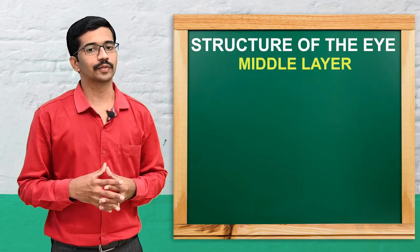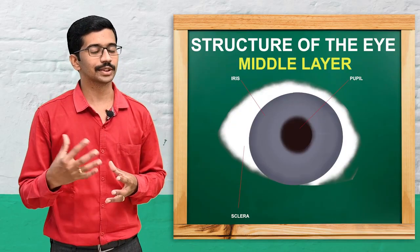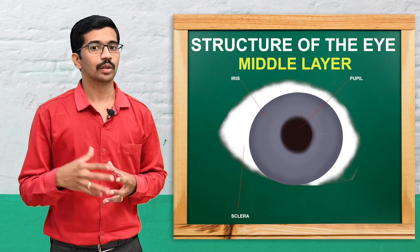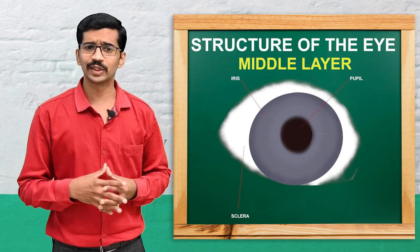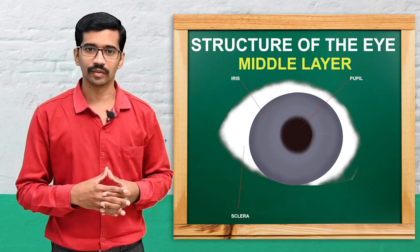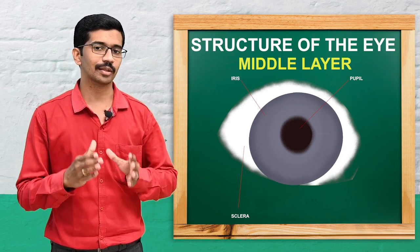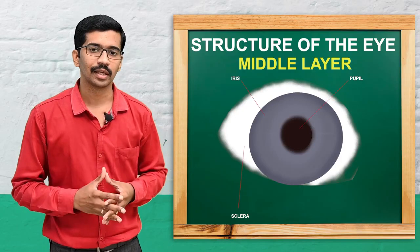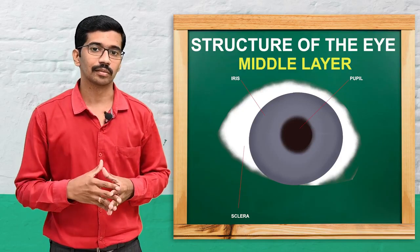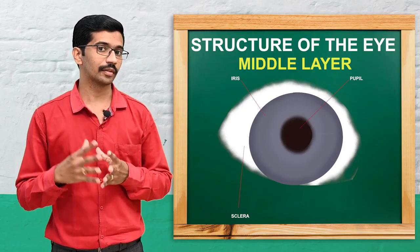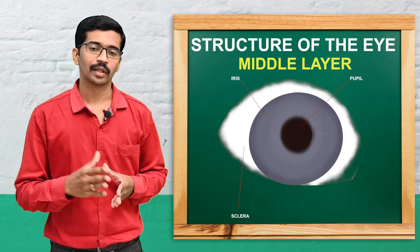The middle layer of the eyeball is the choroid, which is rich in blood vessels and is dark brown in color.